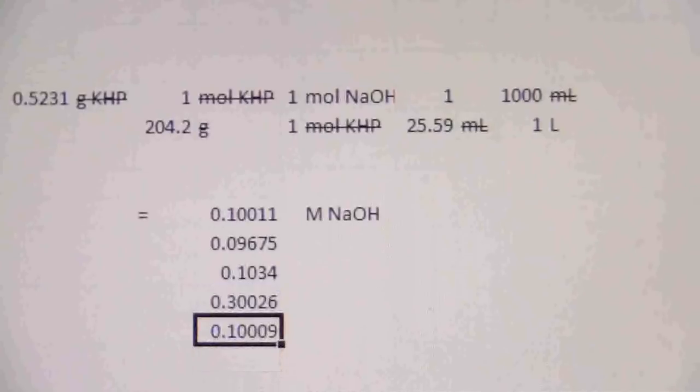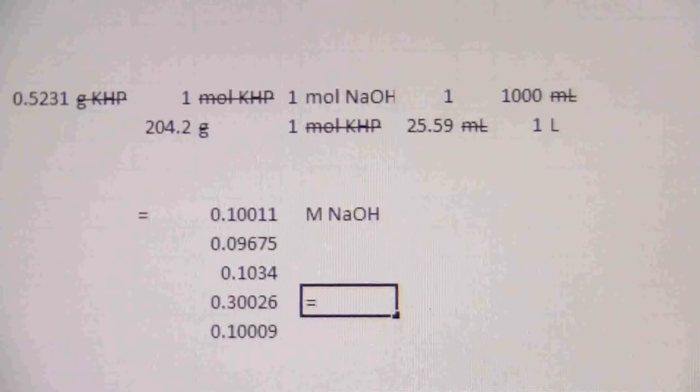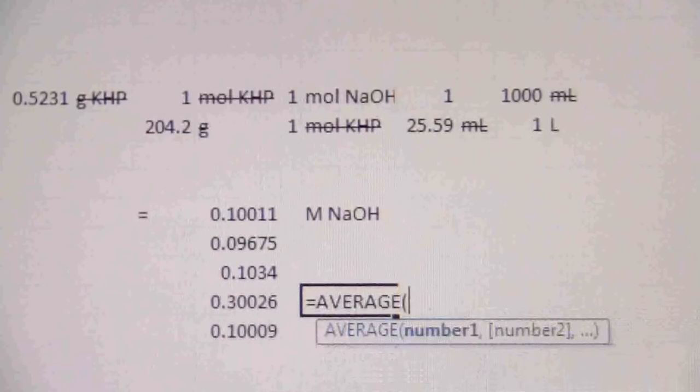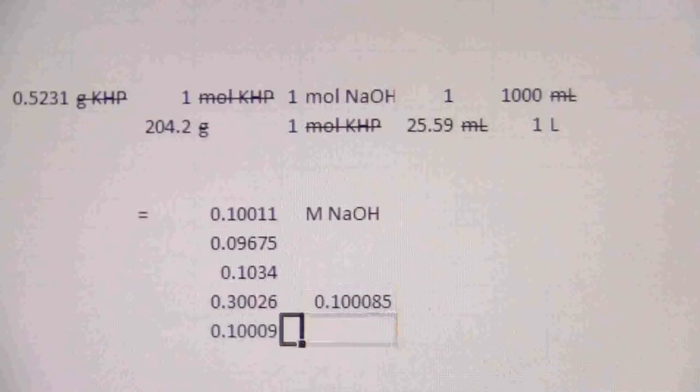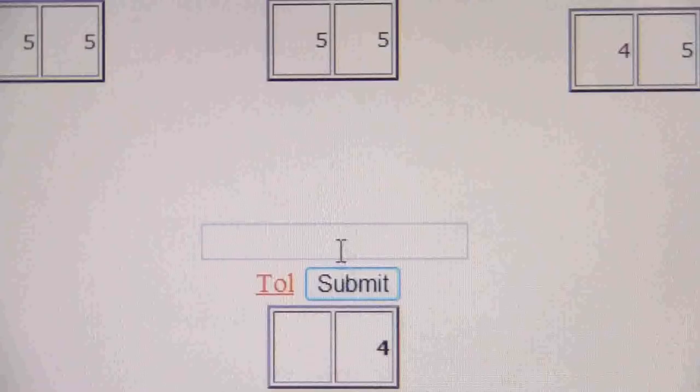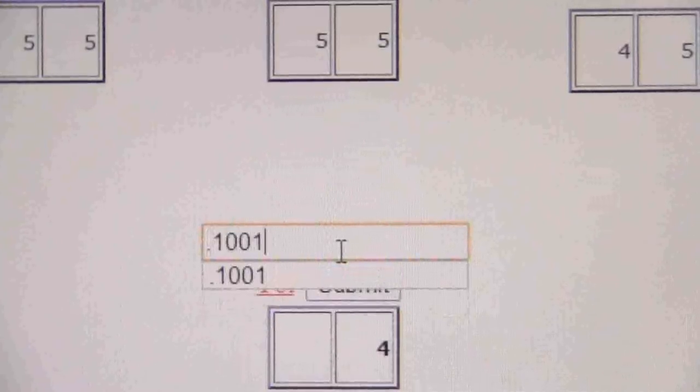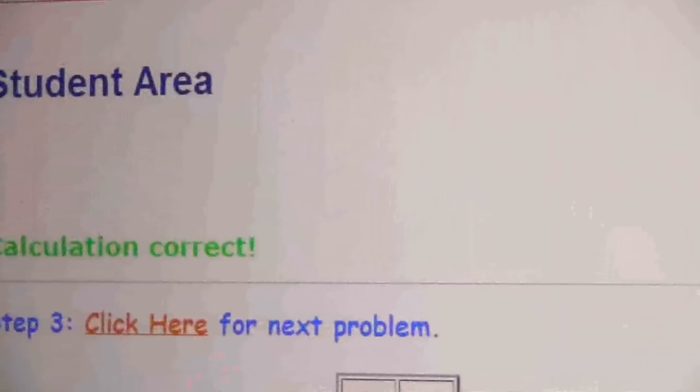Okay, and there's my average. I can also just take this and go equals average and then select those three and it will give me that number directly. Okay, so point one zero zero, I'm gonna round that to point one zero zero one, four significant figures. If I put that in here, there we go.